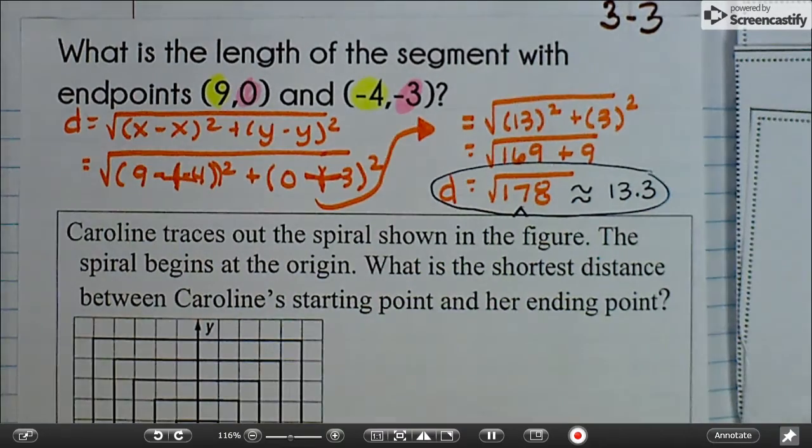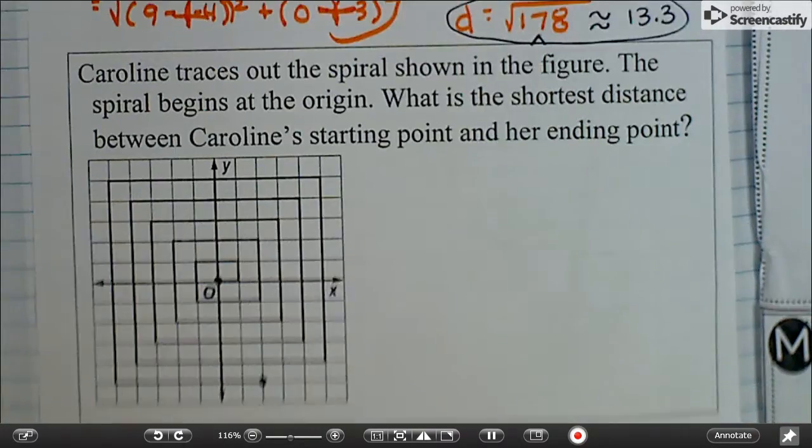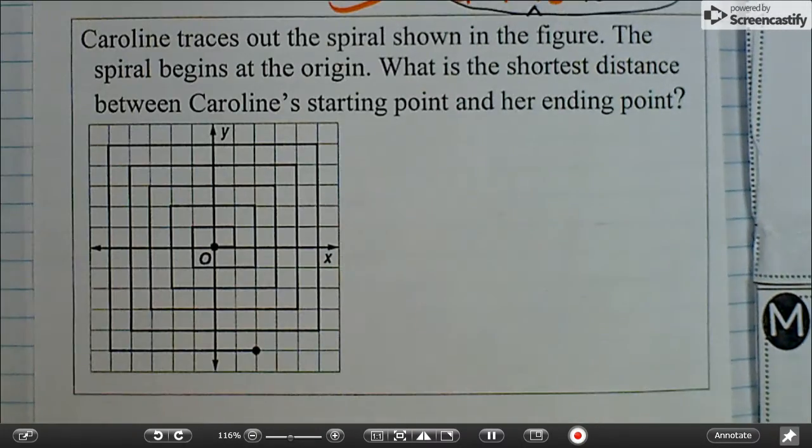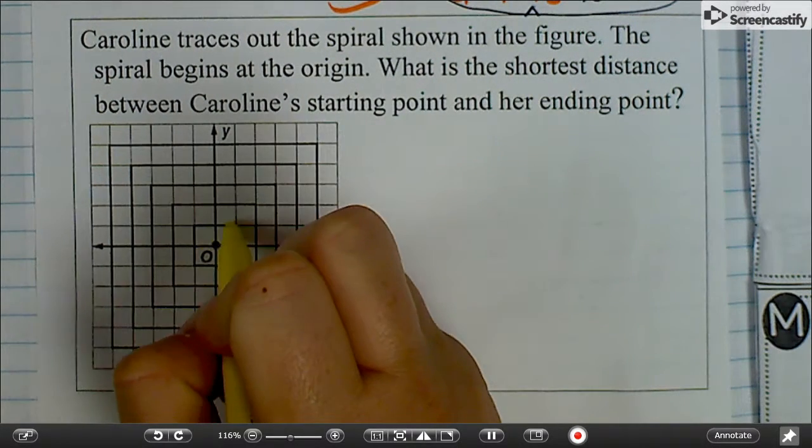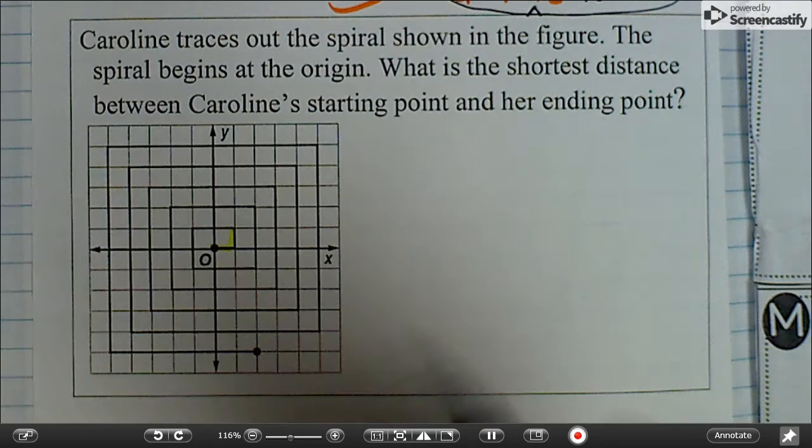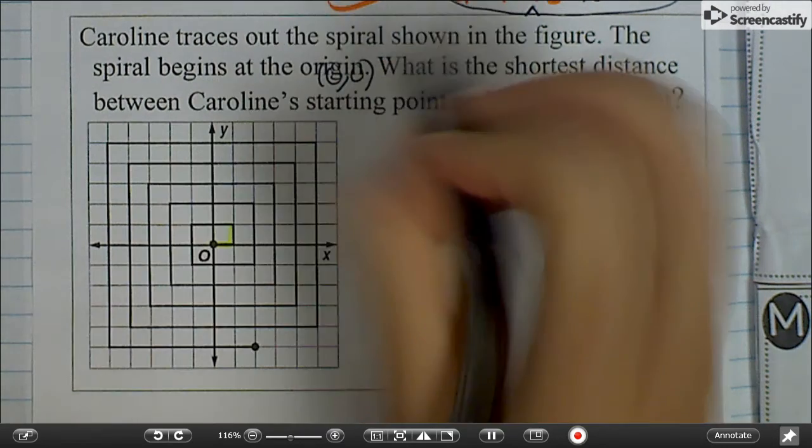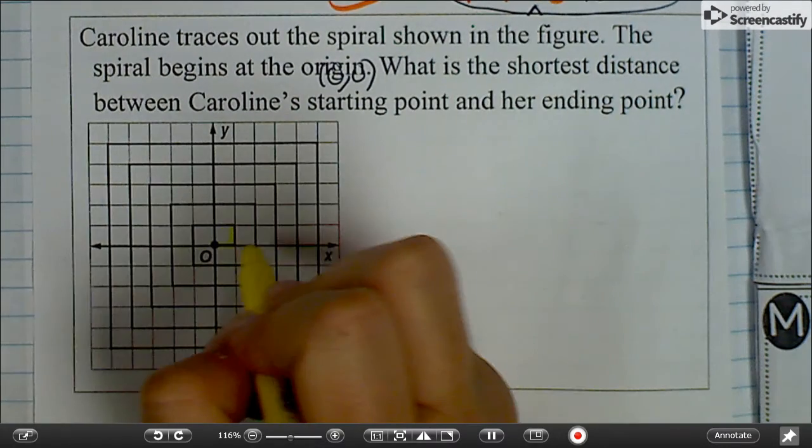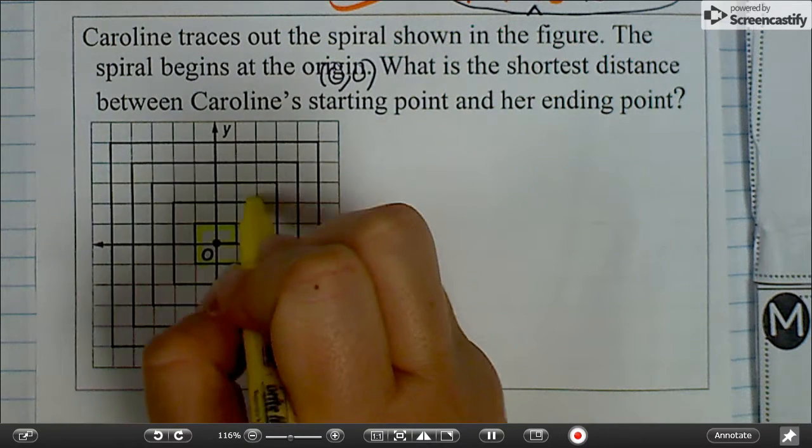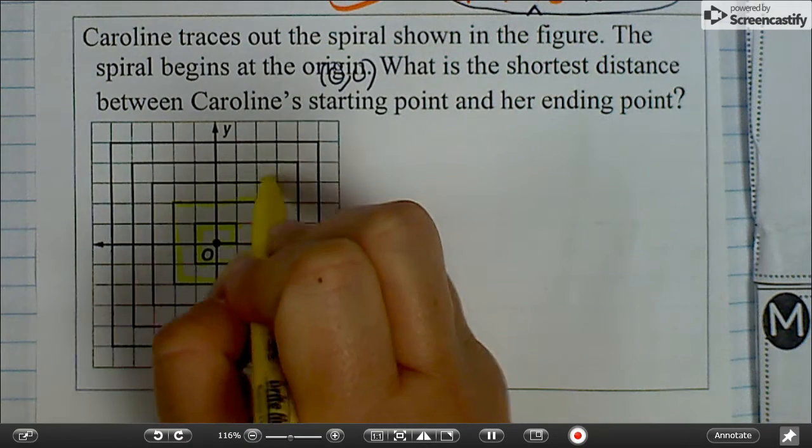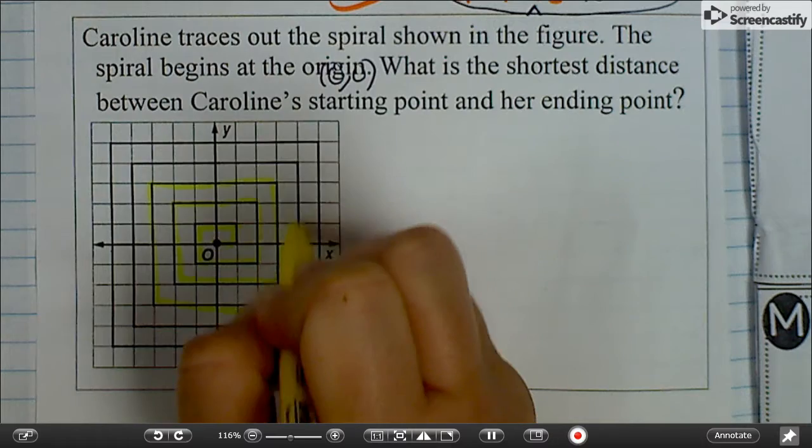And of course, because it's geometry, you're going to have word problems. Caroline traces out the spiral shown in the figure. The spiral begins at the origin, which is 0, 0, and continues around like this. So she's just doing what I'm doing, tracing this whole thing.